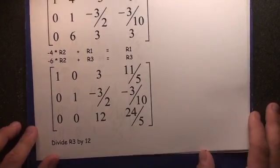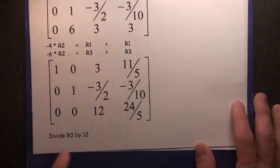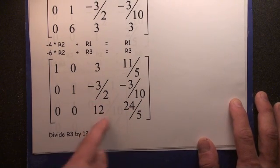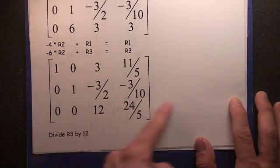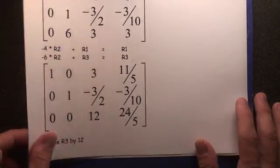Now we're almost there. We're almost there, ladies and gentlemen. We're going to now make the 12 become a 1 by dividing everything here by 12, or in other words, multiplying row number 3 by 1/12th. Bam.